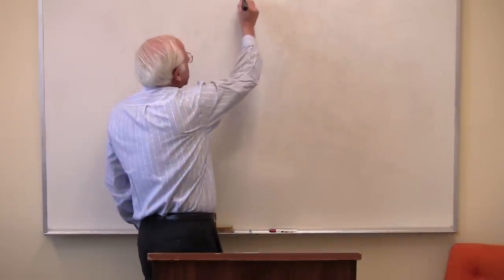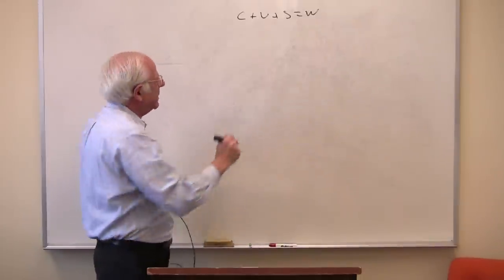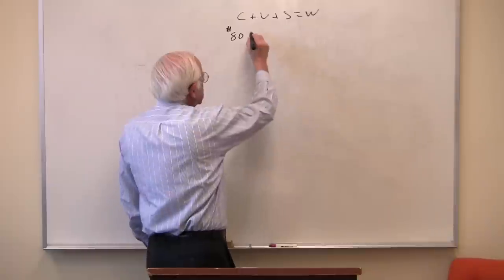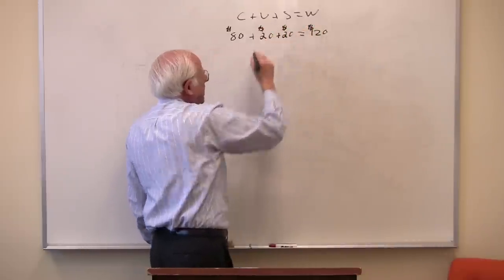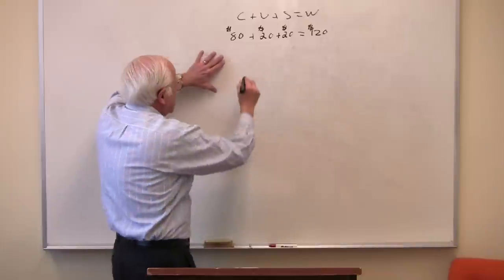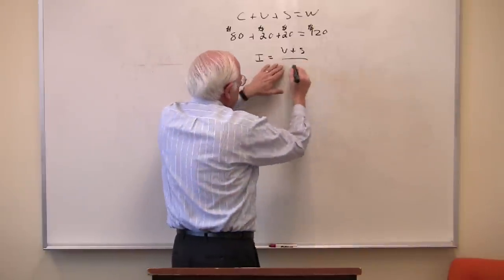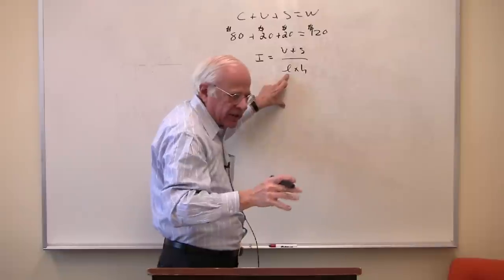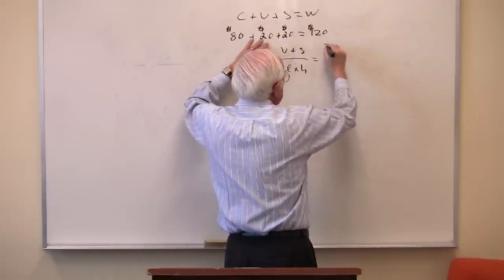So here's the example. We have C + V + S = W, and I'll use numbers. The capitalists use up $80 worth of machines and raw materials, plus $20 of labor power, plus $20 of surplus, so the total value is $120. The intensity of labor is the total value added yielded by the workers — the numerator — divided by the labor hours they work. In this case they yield a total value added of $40.